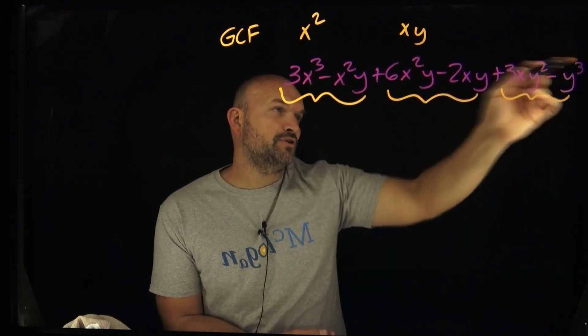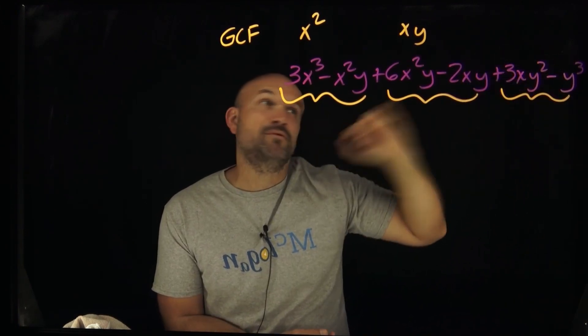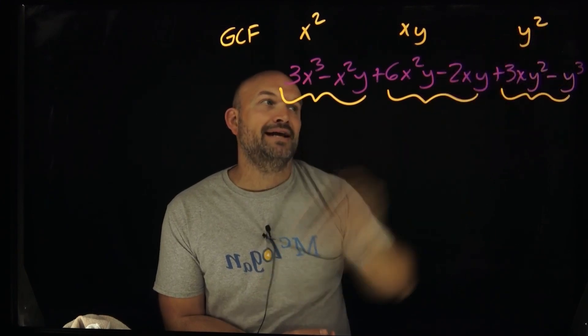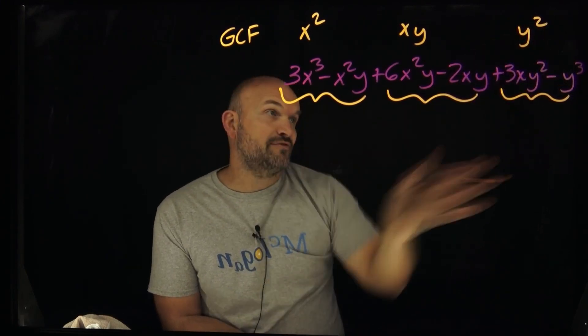And then for my last two terms, they both don't share an x or numbers, but you can see that I do have a y squared. So therefore, I can go ahead and label that as my GCF for the last two terms.